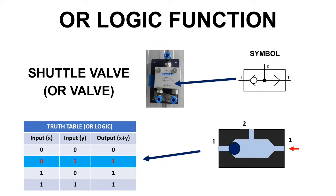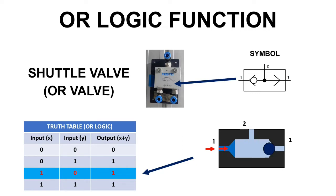On the second row, input X is OFF, input Y is ON and therefore, output X plus Y is ON. On the third row, input X is ON and input Y is OFF and output X plus Y is ON.